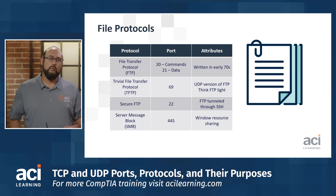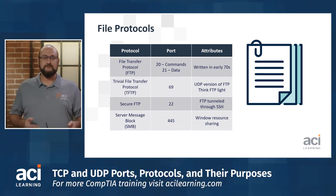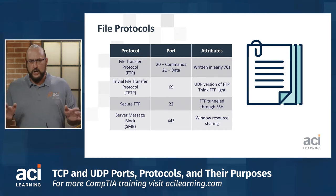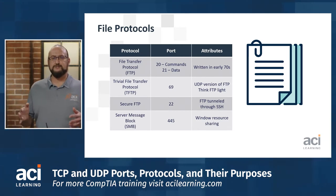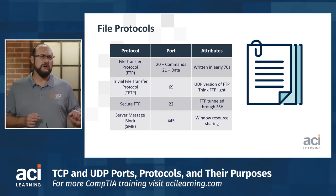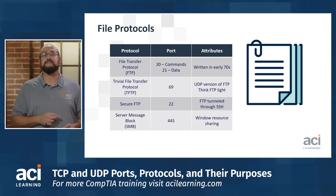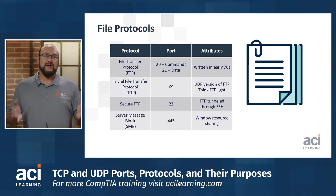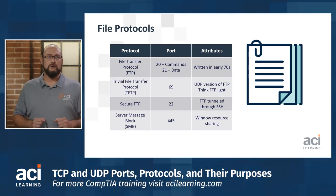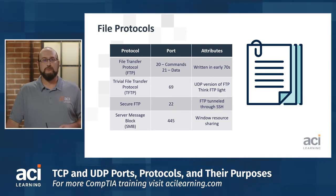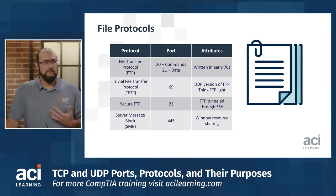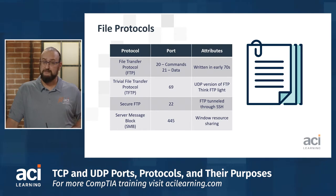Finally, in the Windows world, there is SMB — Server Message Block. There is an open standard called CIFS, the Common Internet File System, but don't worry too much about that — just know it's the open standard versus Microsoft's proprietary implementation. SMB is how we share resources and connect to printers over a Windows-based network, and that uses port 445. Remember the purpose associated with these file protocols, as exam scenarios will test that.